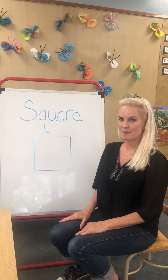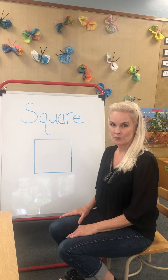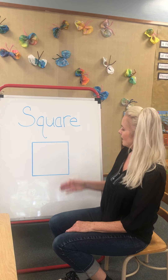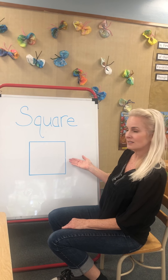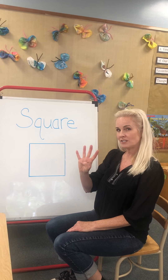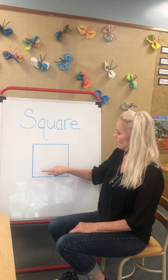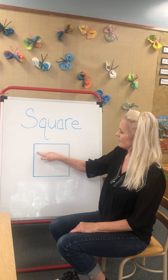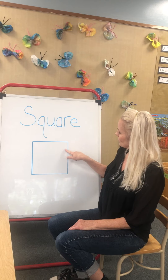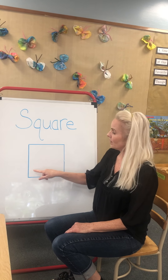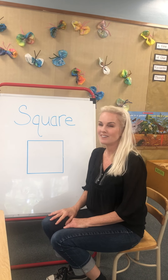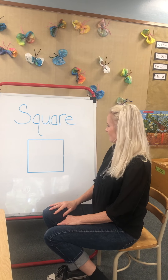You ready? A square is like a box. A square is like a box. It has four sides. One, two, three, four. They're all the same. A square is like a box.